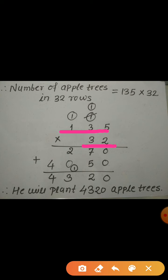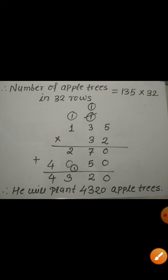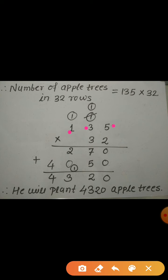Since 32 is a two-digit number, we multiply stepwise. In the first step, I am going to multiply 135 by the digit in the ones place, that is by 2. First, 5 × 2 = 10; I write 0 and carry over 1. Then 3 × 2 = 6, and 6 + 1 = 7. Then 1 × 2 = 2. So the result of the first step is 270.